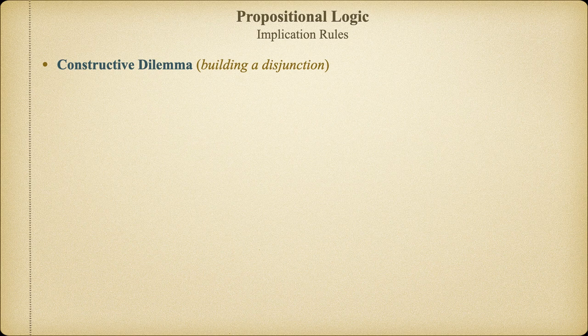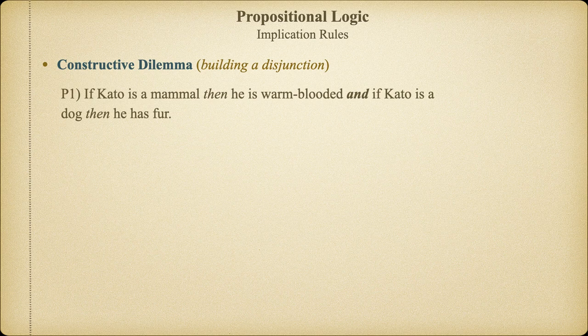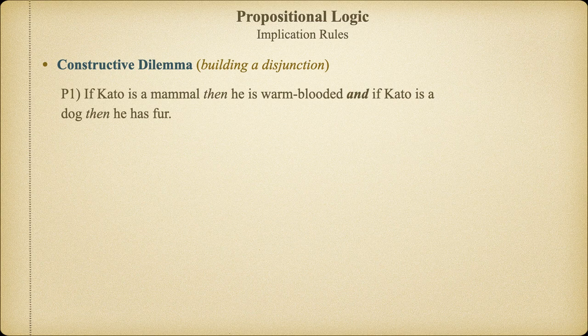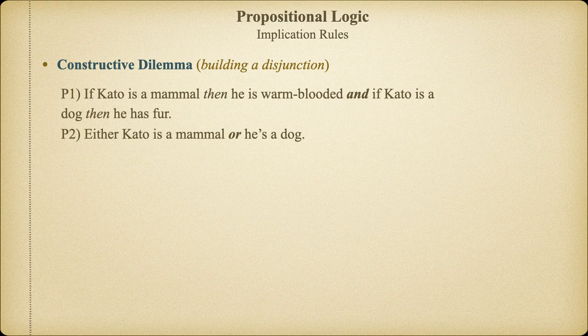Our next inferential rule using conjunction, constructive dilemma, may seem complicated at first, but it's really quite simple. In this syllogism, we begin with the conjunction of two material implications. If Kato is a mammal, then he is warm-blooded, and if Kato is a dog, then he has fur. The conjunction tells us that we're assuming that both material implications are true.